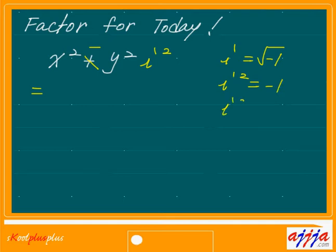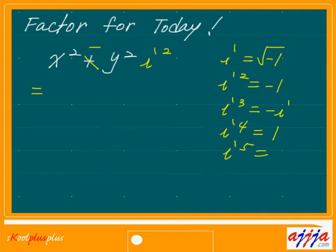So now, third power — that means i squared times i, that's why negative i. What about i to the fourth power? i squared times i squared, which is negative 1 times negative 1, which is 1. Then what about i to the fifth power? That means automatically going back to i, which is just i, because i to the fourth power is 1, then just i left, which is square root of negative 1, and so on. What is i to the hundredth power? That's 1. Every multiple of 4 is going to be 1.